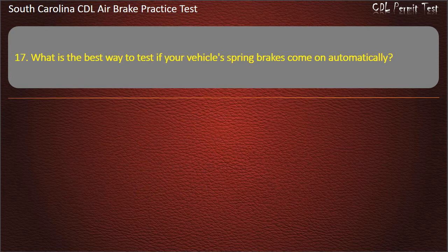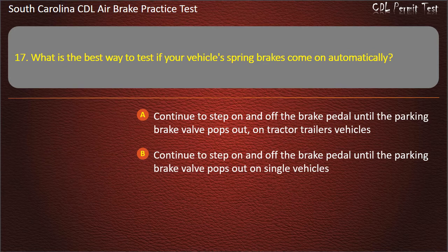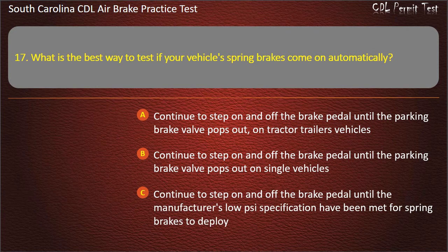Question 17: What is the best way to test if your vehicle's spring brakes come on automatically? Continue to step on and off the brake pedal until the parking brake valve pops out on tractor-trailer vehicles; continue to step on and off the brake pedal until the parking brake valve pops out on single vehicles; continue to step on and off the brake pedal until the manufacturer's low-size specifications have been met for spring brakes to deploy; or all of the above. Answer: All of the above.